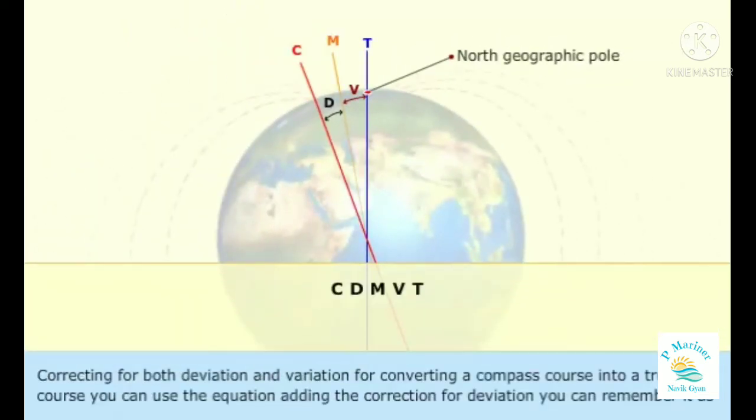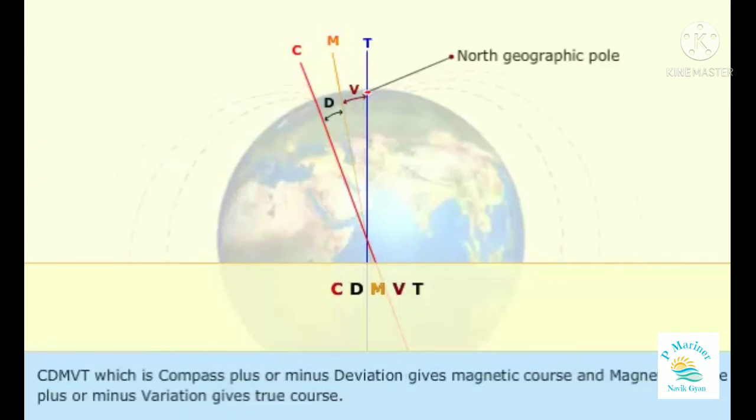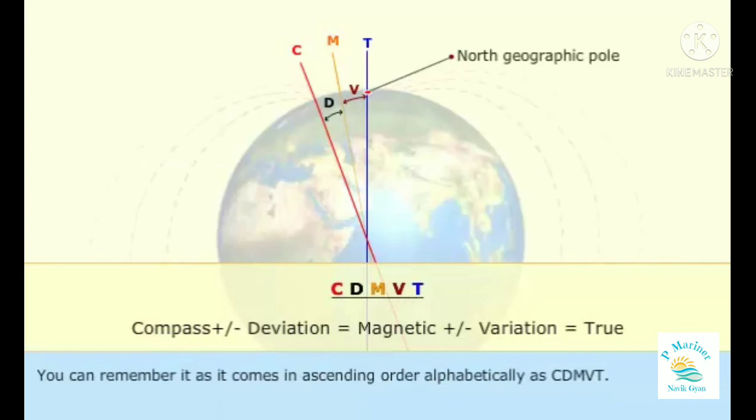Correcting for both deviation and variation. For converting a compass course into a true course, you can use the equation, adding the correction for deviation. You can remember it as CDMVT, which is compass plus or minus deviation gives magnetic course and magnetic course plus or minus variation gives true course. You can remember it as it comes in ascending order alphabetically as CDMVT.